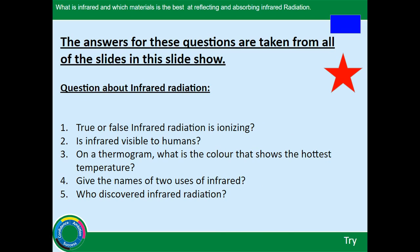Now for the quiz answers — these are taken from all slides including those with yellow dots. Number one: true or false — infrared radiation is ionizing? Number two: is infrared visible to humans? Number three: on a thermogram, what colour shows the hottest temperature? Number four: give two uses of infrared. Number five: who discovered infrared radiation? Pause and complete these questions now.